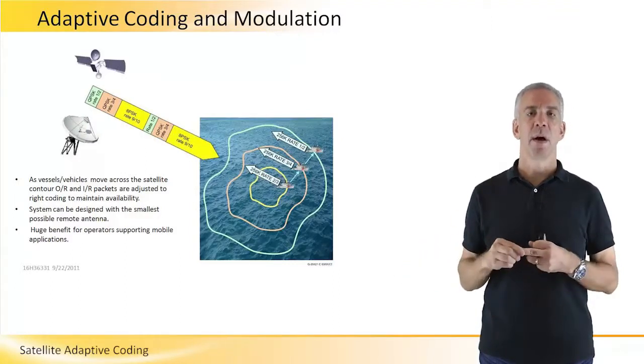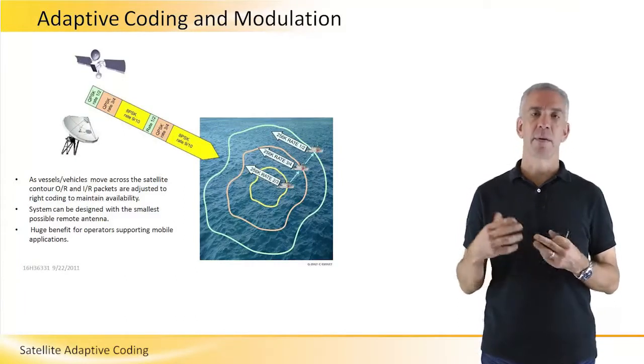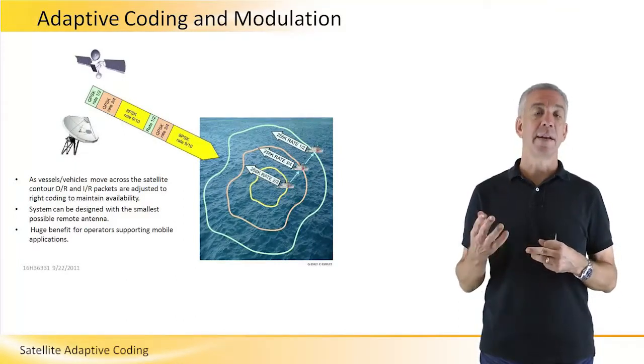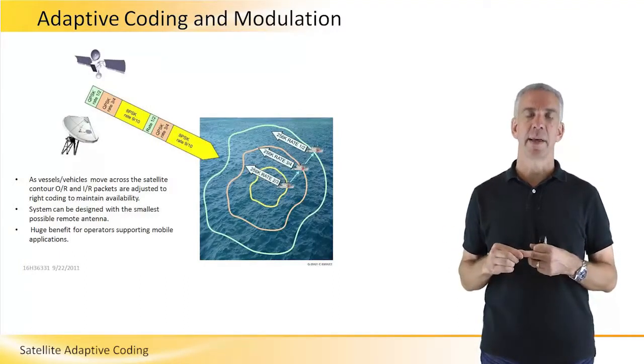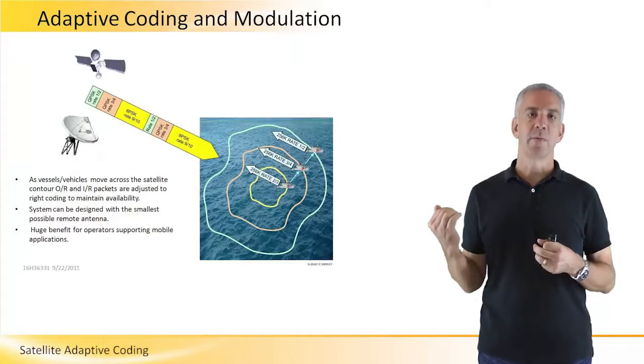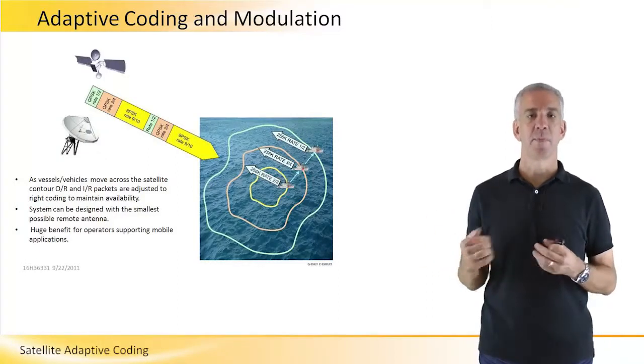Similar with changing the coding rate, perhaps from rate eight-ninths to rate one-half, also significantly improves the reception of the signal at the remote.